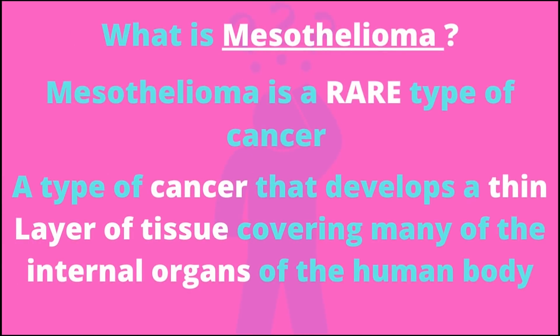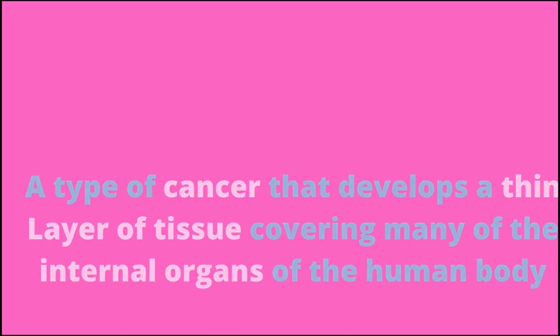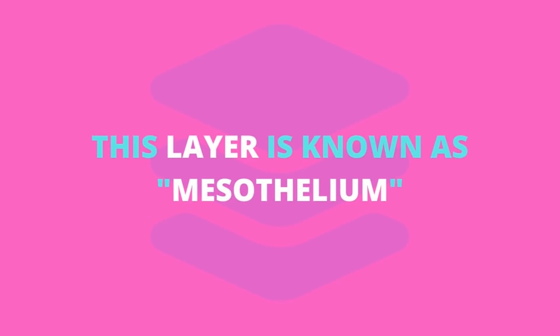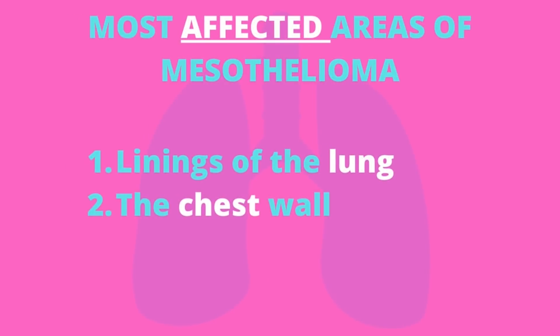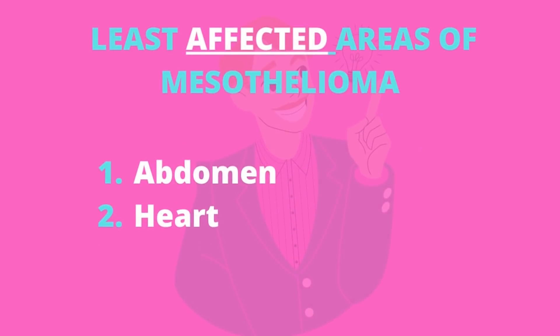Mesothelioma is a very rare type of cancer that develops from a thin layer of tissue covering many of the internal organs of the human body. This thin layer of tissue is known as mesothelium. The most commonly affected areas of mesothelioma cancer are the lining of the lungs and the chest wall. The least commonly affected areas are the abdomen and, rarely, the heart.